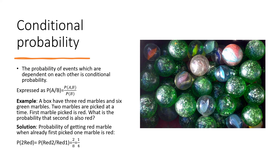Now we go into the third topic of this session: conditional probability. In conditional probability, a first event has already happened, and based on that we ask: what is the probability of the second event also happening? The formula is: P(A|B) — the probability of A given B has already happened — equals the probability of both A and B occurring divided by the probability of B.